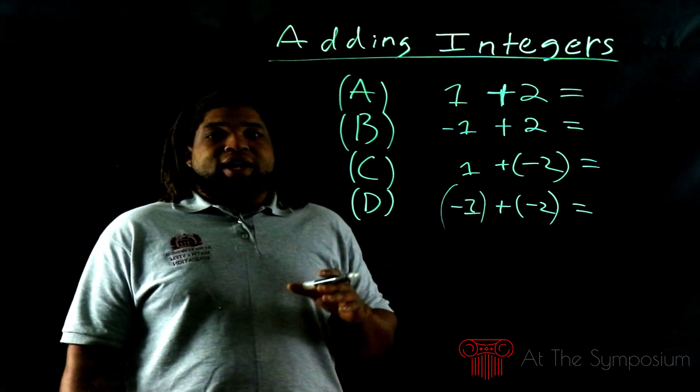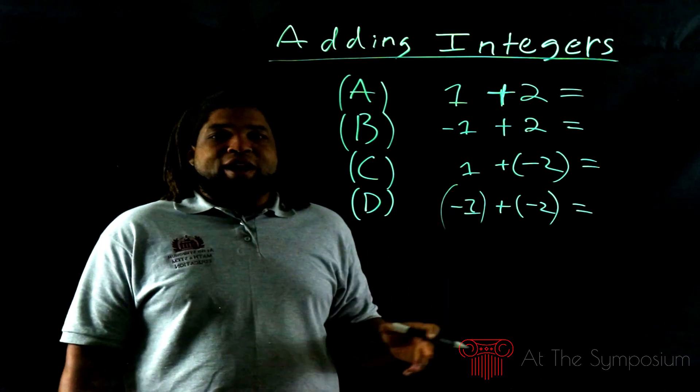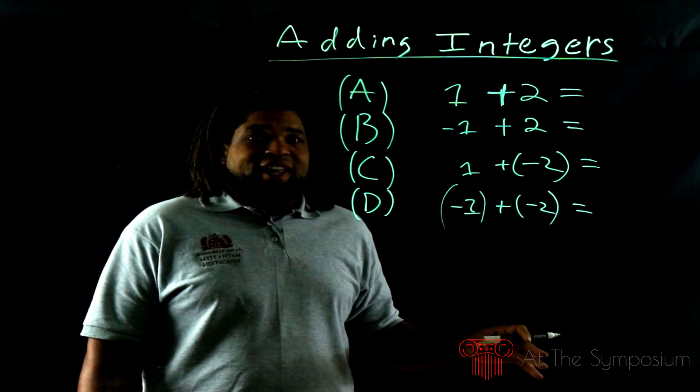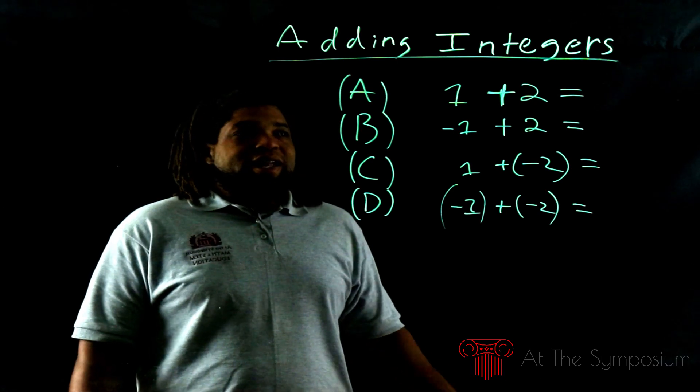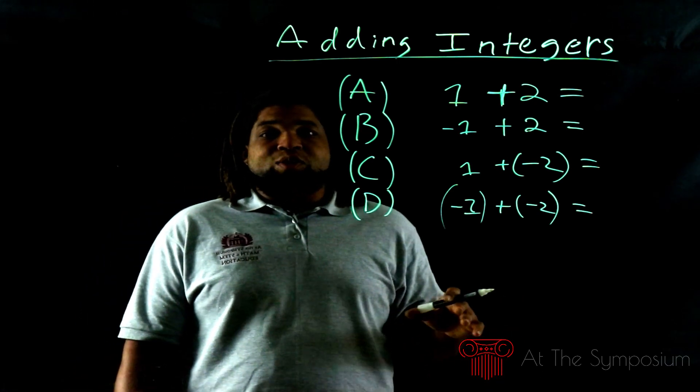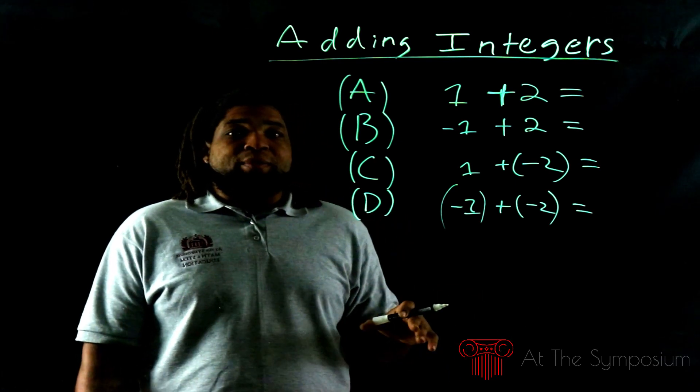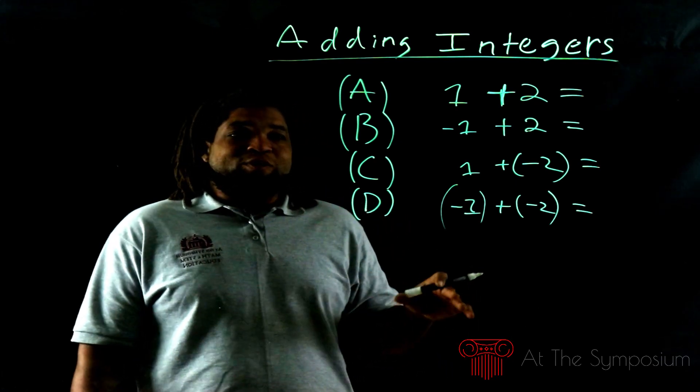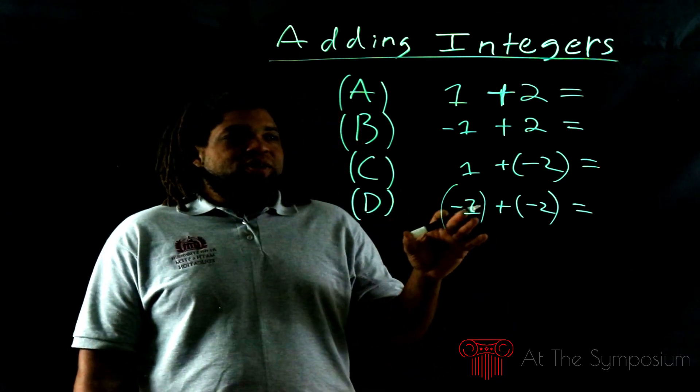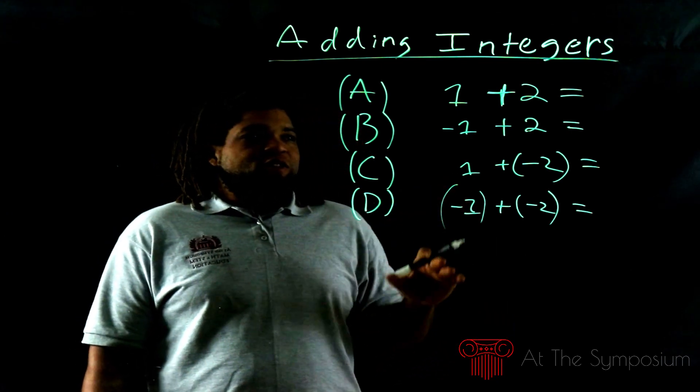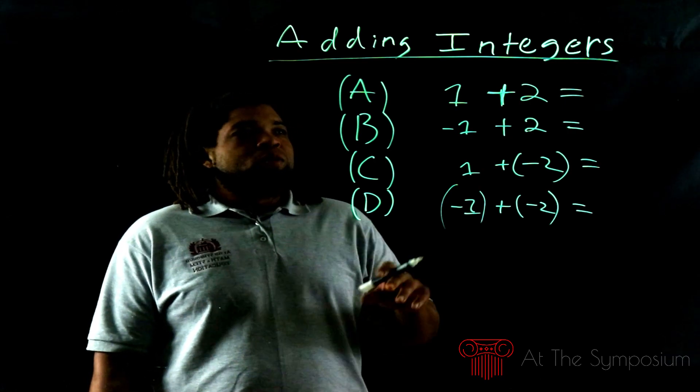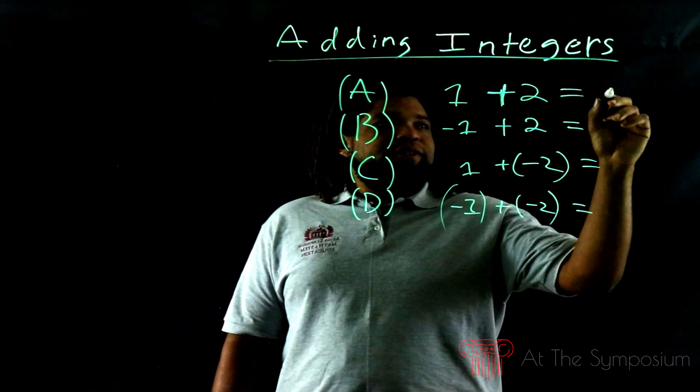once you're going into Algebra 1, Algebra 2, calculus, whatever it is, the numbers aren't what trip you up anymore in mathematics. It's usually now the operations - getting the operations in order and doing them properly and in sequence so you get the right answer. But it's not the numbers that trip us up. So the value of the numbers is pretty much irrelevant. We're just going to use simple numbers here. 1 + 2 = 3.